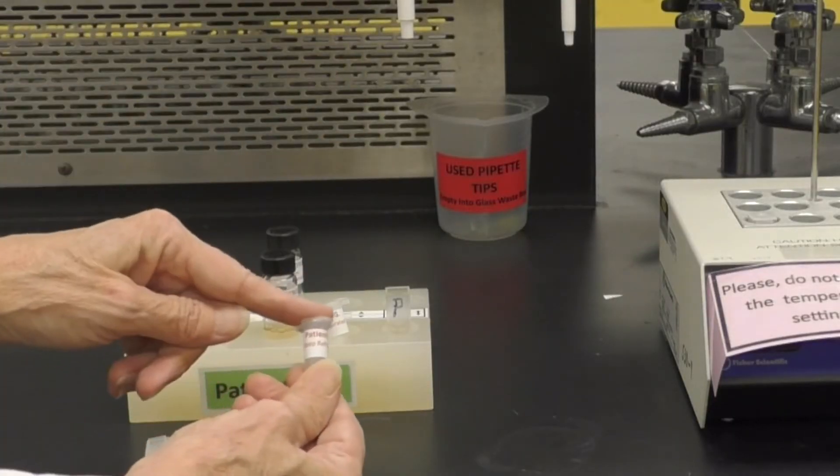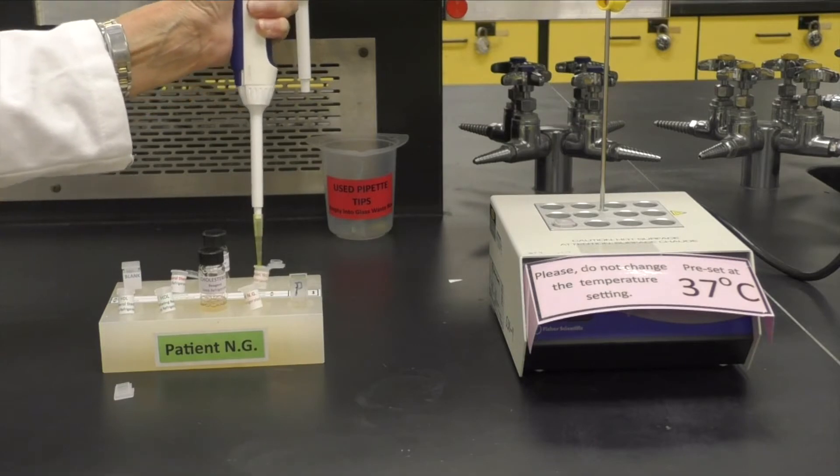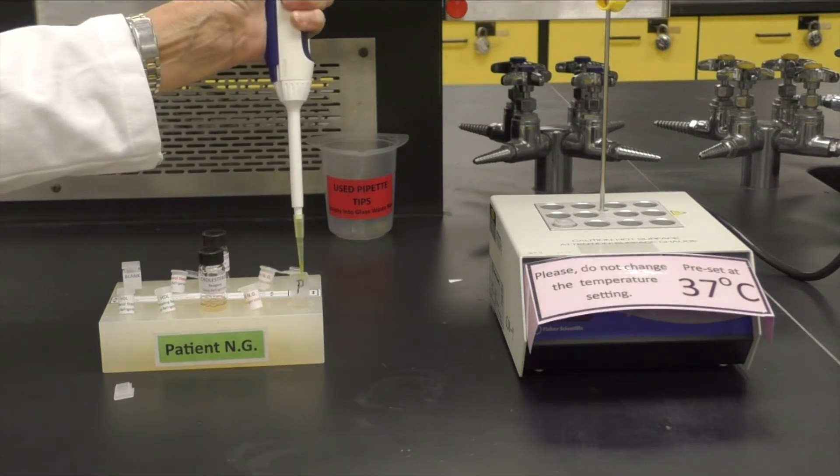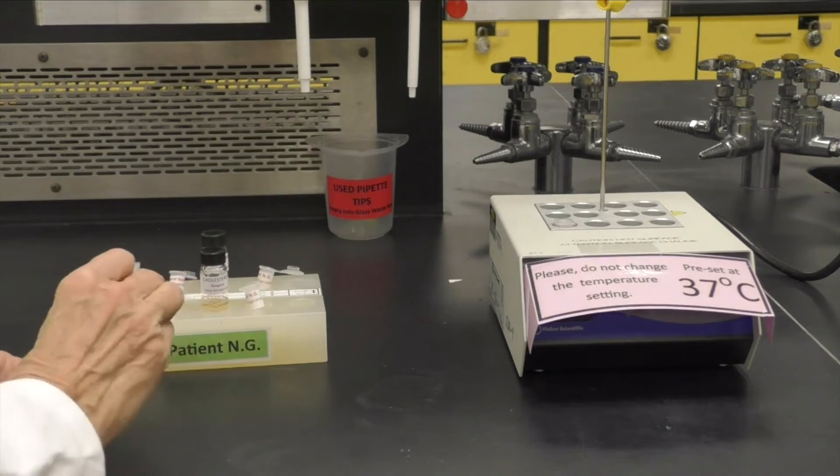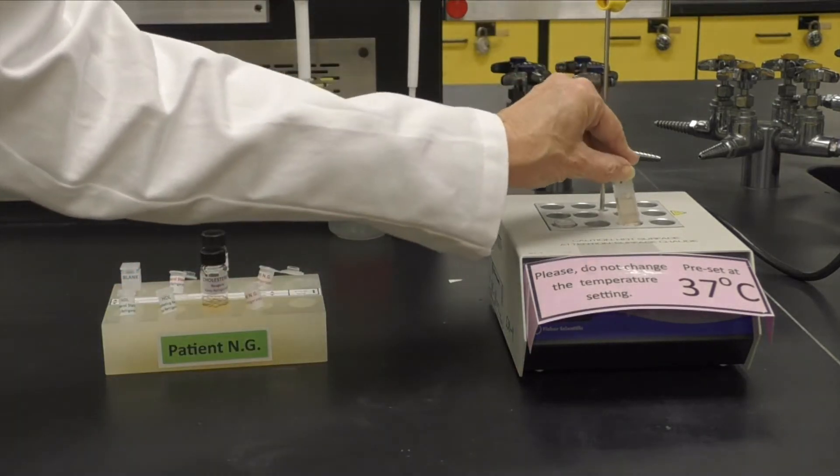After about 2 or 3 minutes, you can prepare the patient sample by micropipetting 20 microliters of your patient sample into the remaining cuvette, capping, mixing, and placing it in the dry bath for 5 minutes.